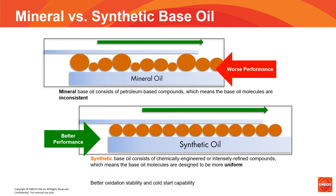When we look at the differences between mineral oil — better known as conventional oil — and synthetic, it is easy to see, as illustrated in this picture, that mineral oil consists of very irregular or inconsistent size molecules, whereas synthetic oil molecules are more uniform. This leads to the fact that synthetic oils simply perform better than conventional oils.